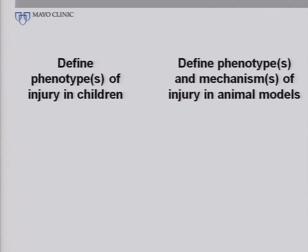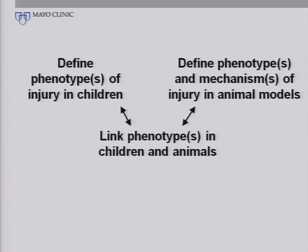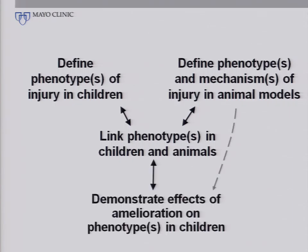So if we look at our problem, we're trying to do several things simultaneously. We're trying to define the phenotype or phenotypes of injury in children. We're also trying to define the phenotypes and mechanisms of injury in animal models. What we haven't been too good at is tying the two together, because eventually, if we're going to answer the question of whether what we see in animals is relevant to children, we're going to have to link the phenotypes in some way. Just because we see something in animals and something that might be similar in children does not necessarily mean they're caused by the same process.